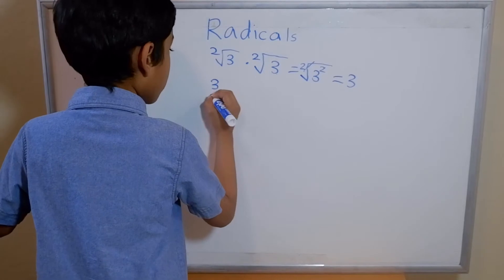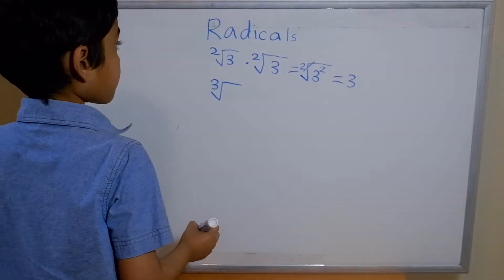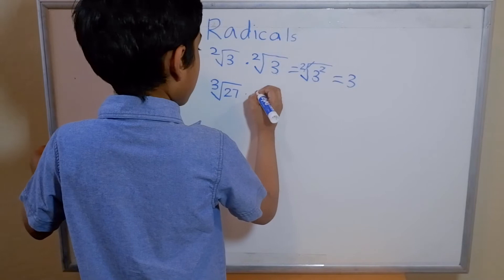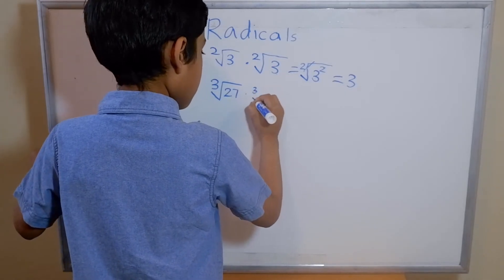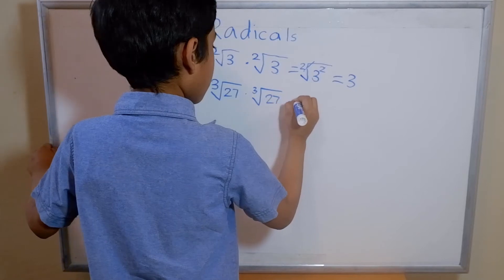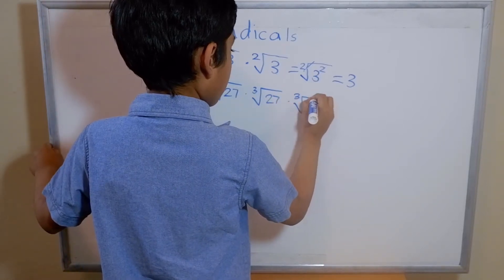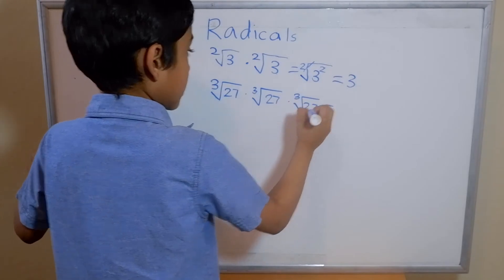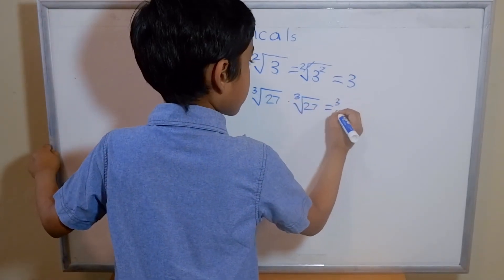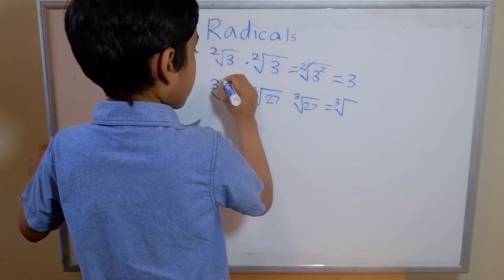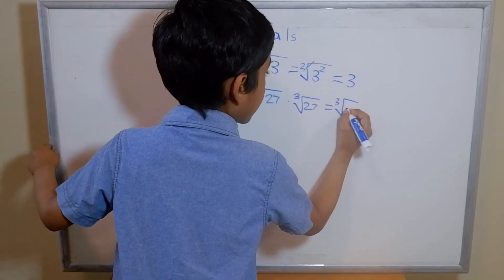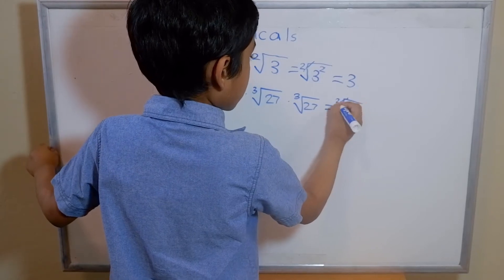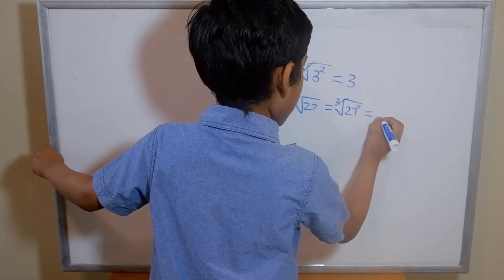Let's look at the cube root. Let's take 27 multiplied by itself 2 more times — that's three times total. Since we have 3 times of this, we get the third root. The cube root stays, and 27 becomes 27 cubed. As we can see, we can cross the index 3 and the exponent 3 out — they cancel — and we are left with 27.